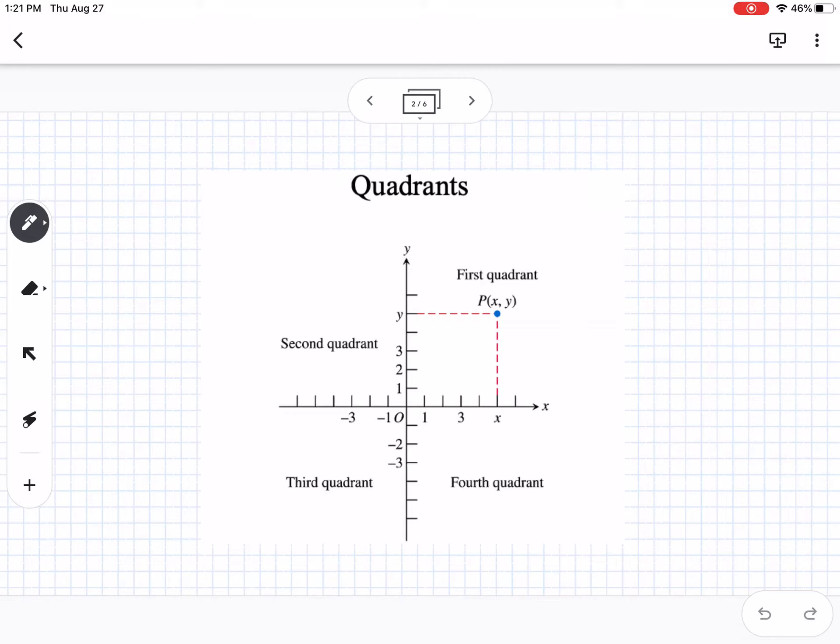Okay, so this is just very much back to the basics, how we graph. So first quadrant, second quadrant, third quadrant, and fourth quadrant. Sometimes you will see them written with the Roman numerals too, so Q1, Q2, Q3, and Q4.